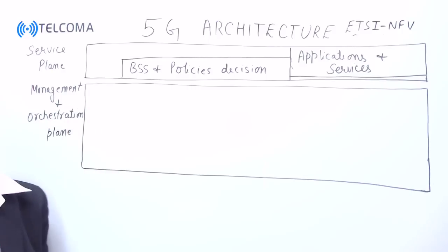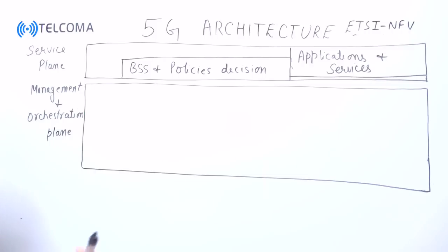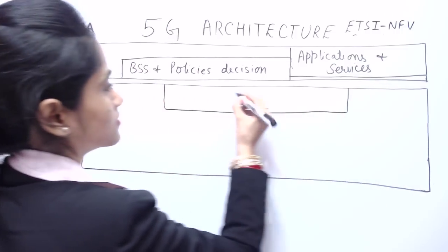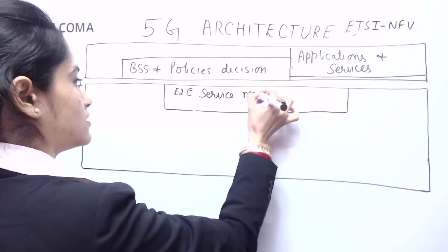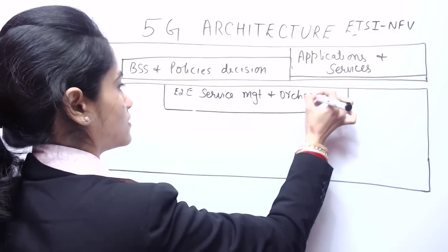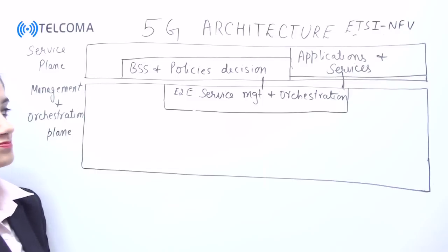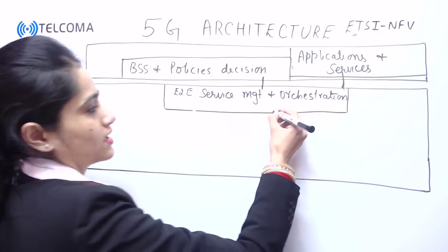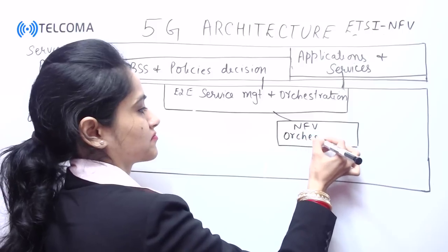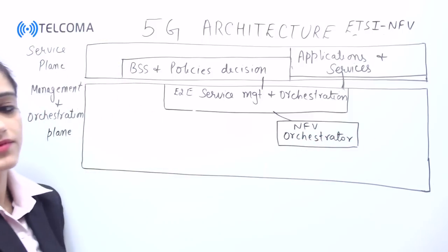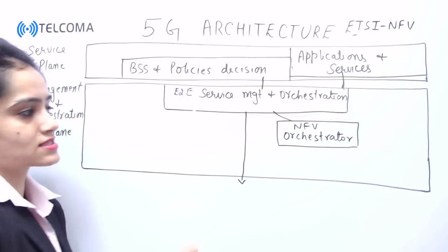The second plane is the management and orchestration plane. In this plane we are having end-to-end service management and orchestration. This is connected to applications and services as well as BSS decision and policies. The service management and orchestration module is connected to the network function virtualization NFV orchestrator.